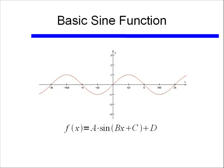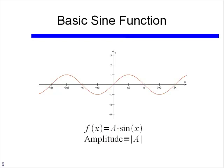Let's start off by focusing on a. As I said before, a is the amplitude of the function. The amplitude is always positive, just like the radius of a circle is always positive. So the amplitude is equal to the absolute value of whatever number we're multiplying by sine.